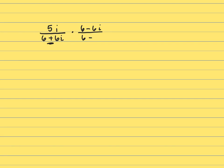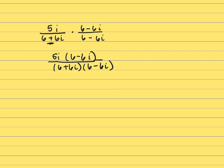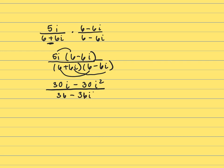So I'm multiplying top and bottom by 6 minus 6i. If you perform that multiplication, you're going to have 5i times (6 minus 6i), all over (6 plus 6i) times (6 minus 6i). That's going to be 5i times 6, which gives 30i minus 30i squared. In the bottom, that's going to be 36 (6 times 6), and 6i times negative 6i gives minus 36i squared.